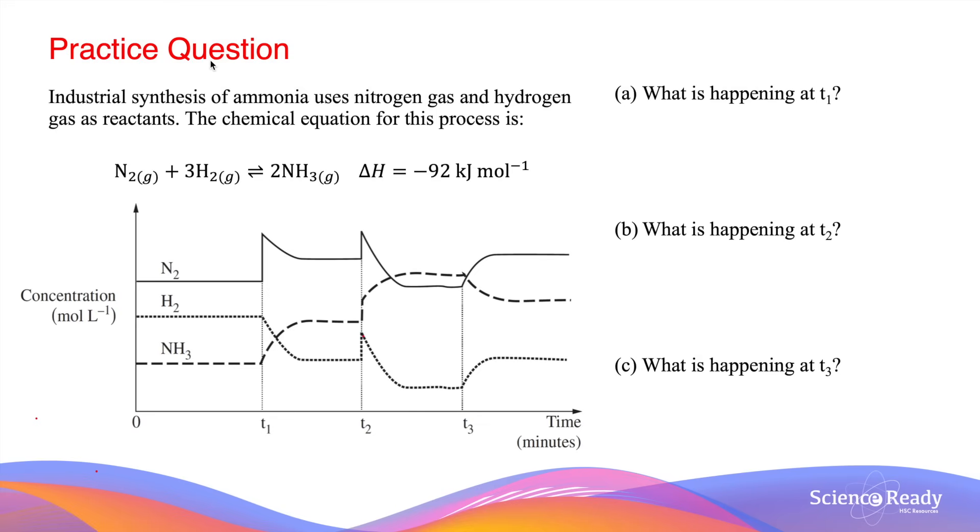Graphs that involve changes in concentration of substances in the equilibrium system are very common exam style questions. Before we go to the graph, there are three key types of changes that you will normally see in a graph like this one.